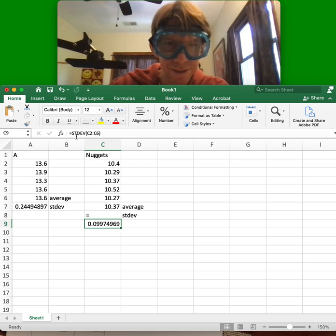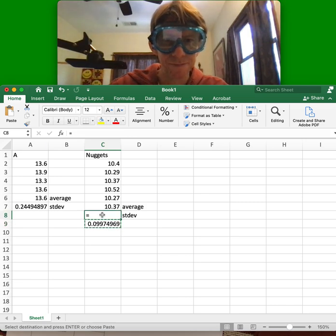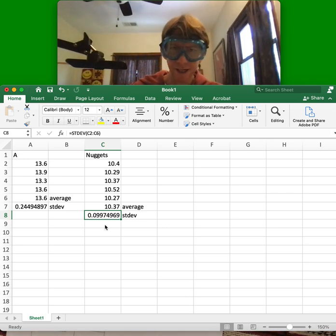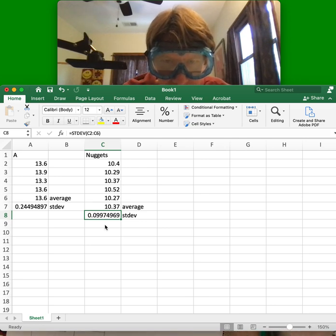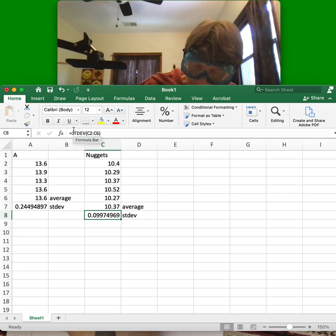I put it in the wrong box, but I can see that my formula is right here. So I'm actually going to cut and paste. Now it's in the right spot. So now I've got 10.37 and 0.09974969. So I'm just going to write them in the box.